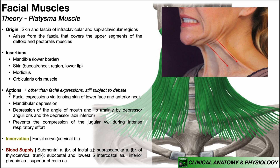For the actions of the platysma muscle: other than producing facial expressions like the one shown in the image, the exact functions are still subject to debate. The platysma facilitates expressions seen during times of disgust or surprise by tensing the skin of the lower face and the anterior neck. By virtue of inserting on the lower border of the mandible, it assists with mandibular depression — though mandibular depression is mainly facilitated by gravity, with the lateral pterygoids as the prime mover. The platysma can assist with that.